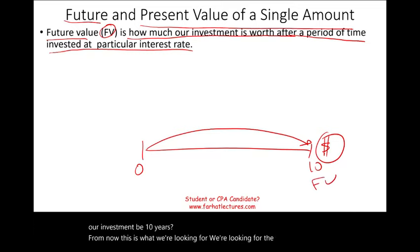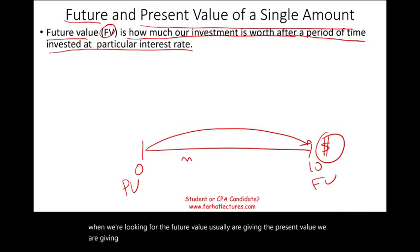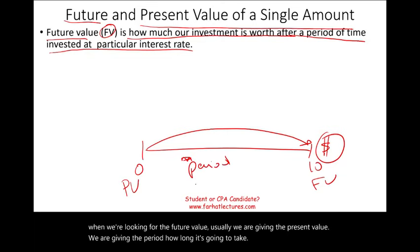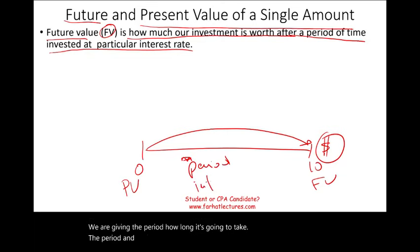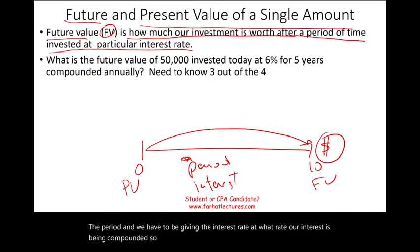When looking for the future value, we are typically given the present value, the period (how long it's going to take), and the interest rate at which interest is being compounded. Let's take a quick example to see how this all works.